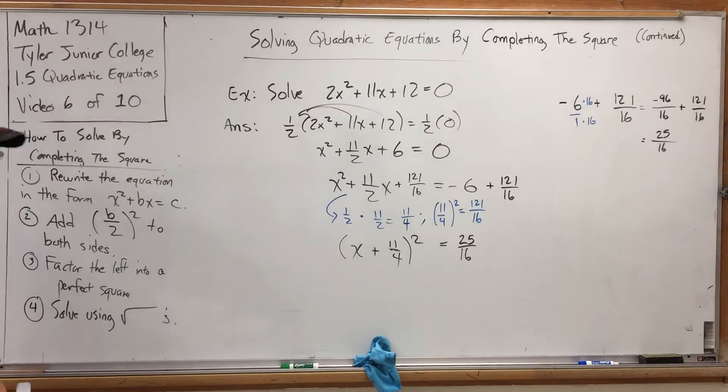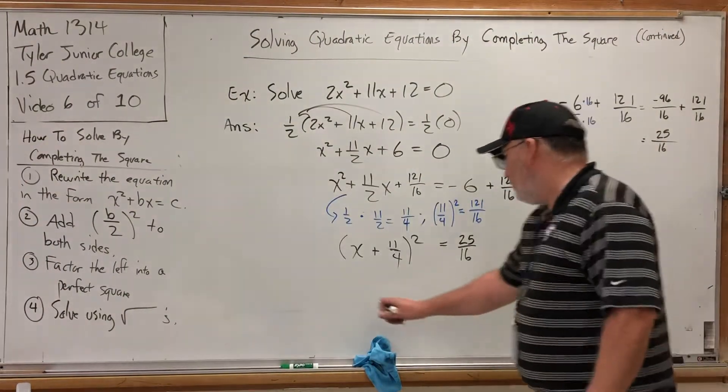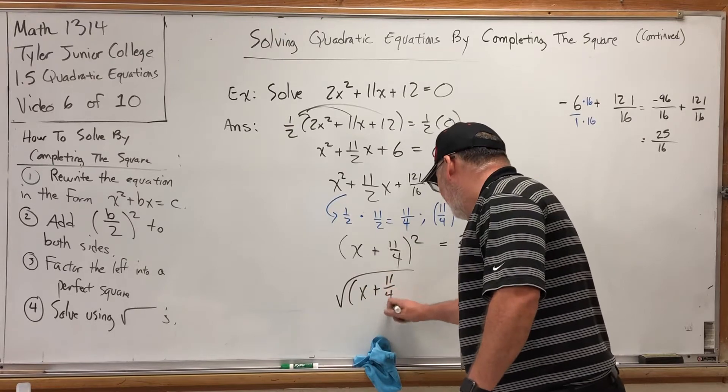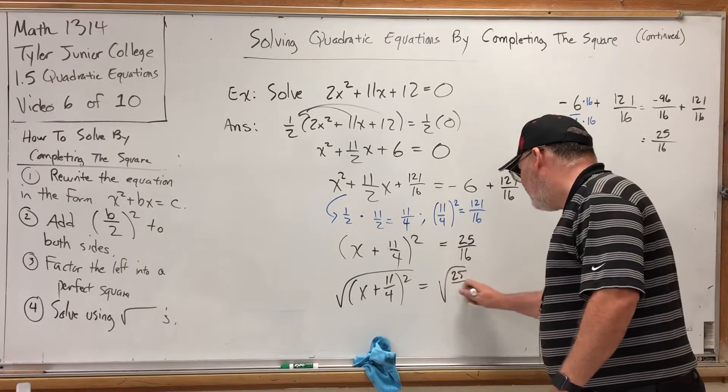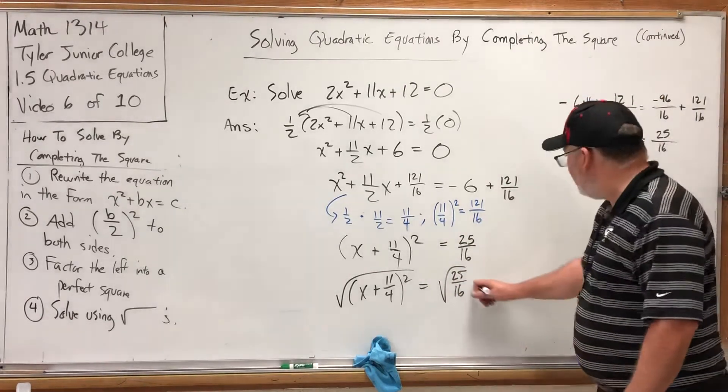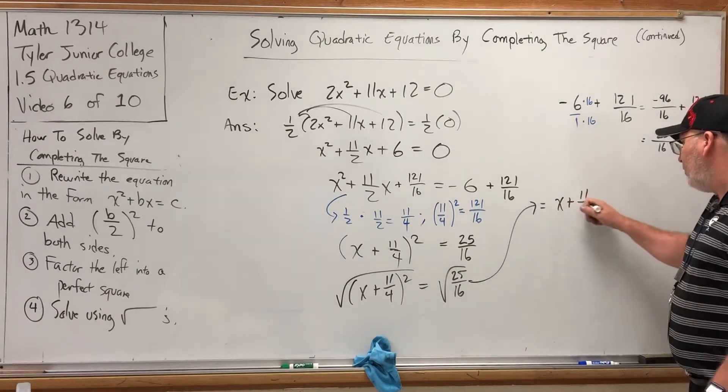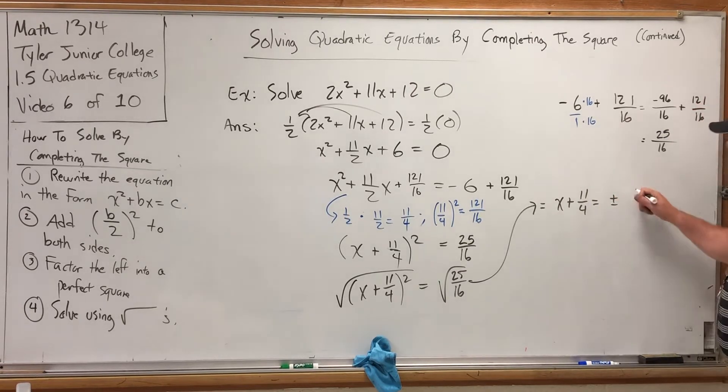The worst part is over. We still have to solve by using square roots. And even though there are fractions here, that's going to be a minor inconvenience. If we square root both sides, we get x plus 11 fourths squared under the square root on the left. And we have 25 sixteenths under the square root on the right, which thankfully I can square root both sides of that fraction. Let's move it over here. Cancel the square. Get x plus 11 fourths equals, don't forget the plus minus, the square root of 25 is 5, the square root of 16 is 4. Hooray!